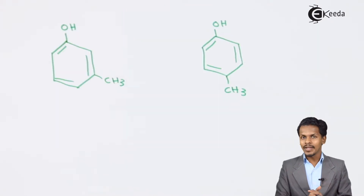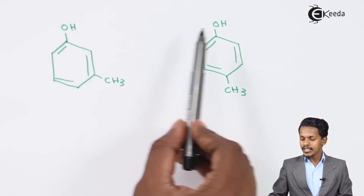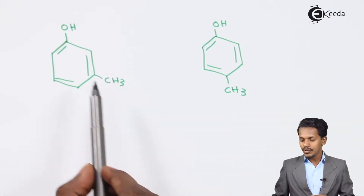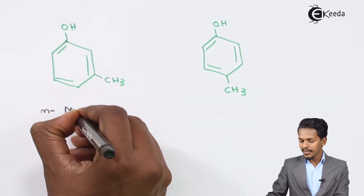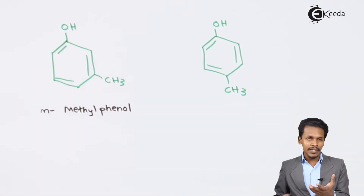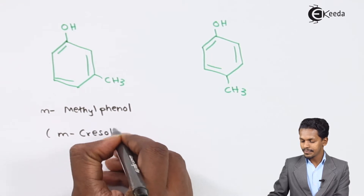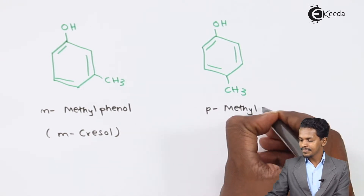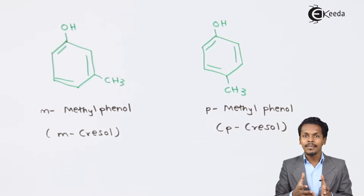Let me give examples to understand the common naming system. In the first example, OH is attached to carbon number 1. The CH3 methyl group is attached to the meta position, so this compound is called m-methylphenol, also known as m-cresol. In the second example, CH3 is attached to the para position, so it is called para-methylphenol or p-cresol.